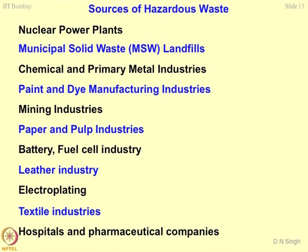Paper and pulp industries — Bhadrachalam is famous for this, and in North India, the Nepanagar and Roorkee area. Battery and fuel cell industries are another culprit. Present-day society is migrating from electricity to batteries, and nickel-cadmium is the biggest hazardous component in batteries, along with zinc and mercury in electronic circuits.